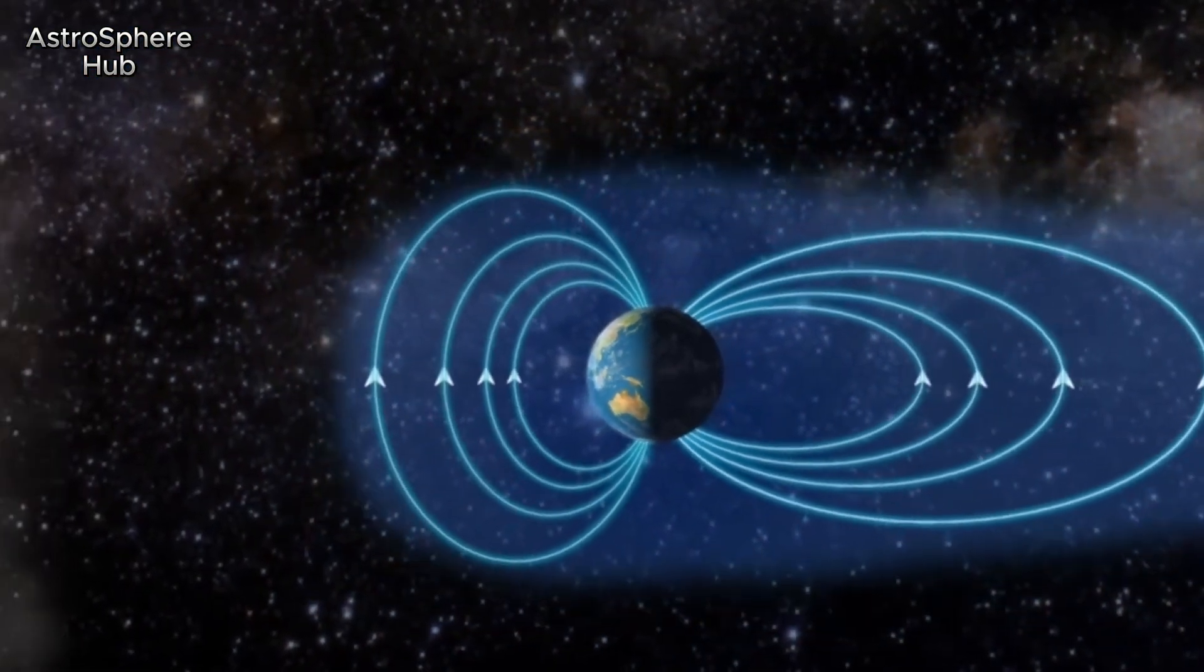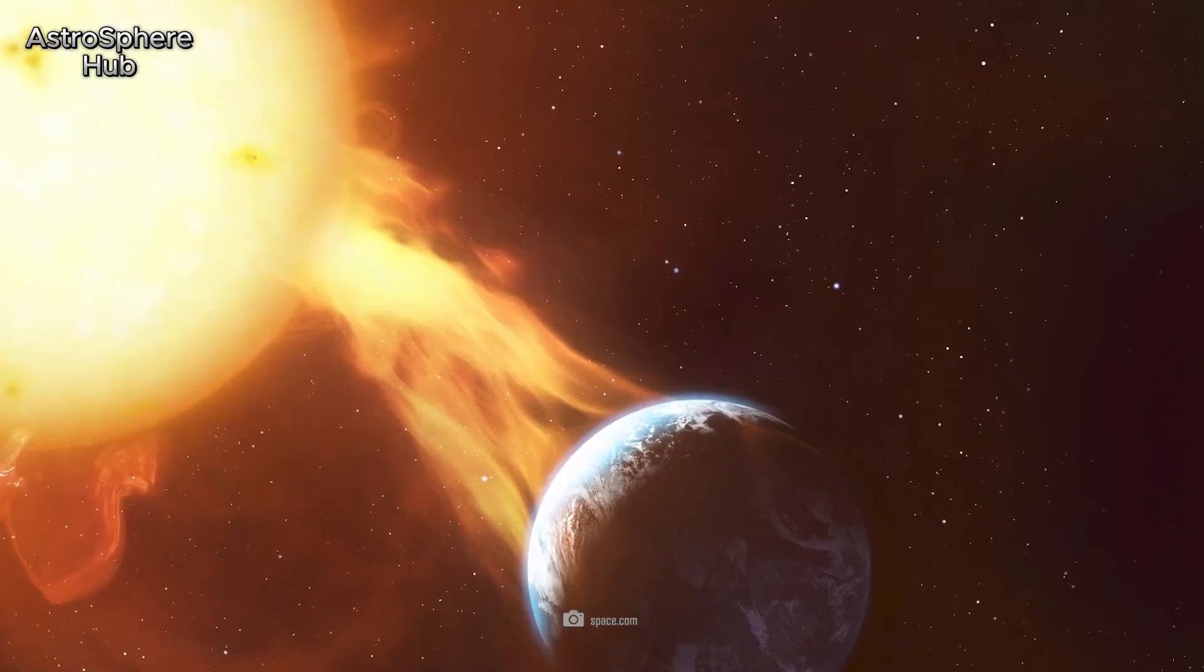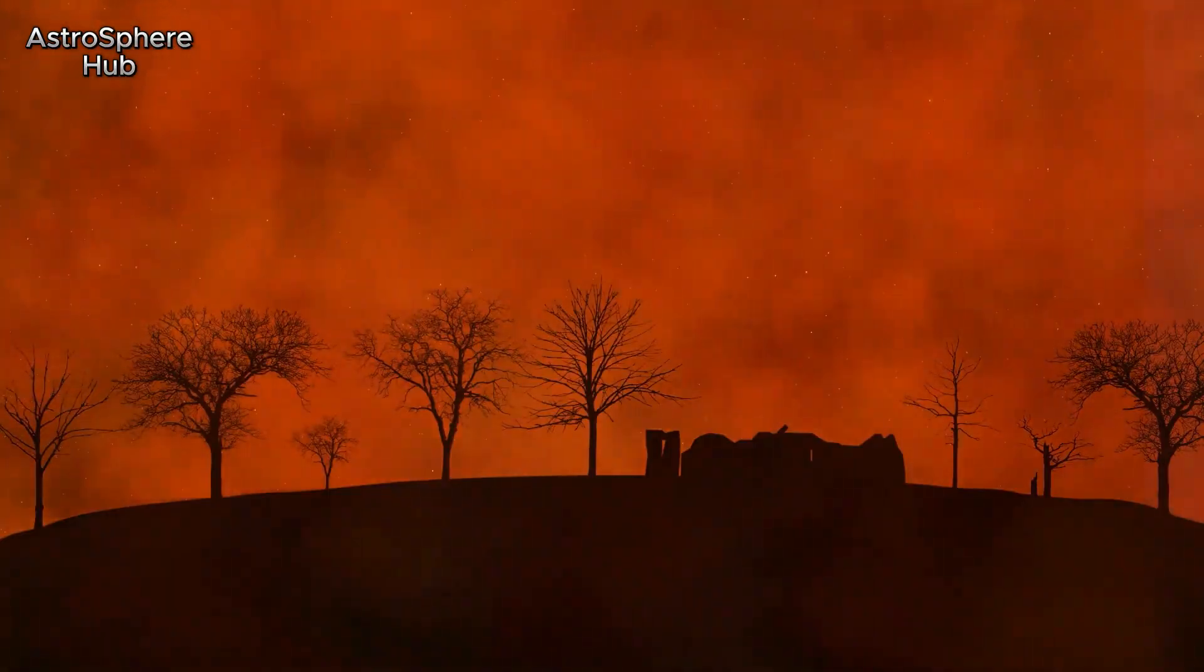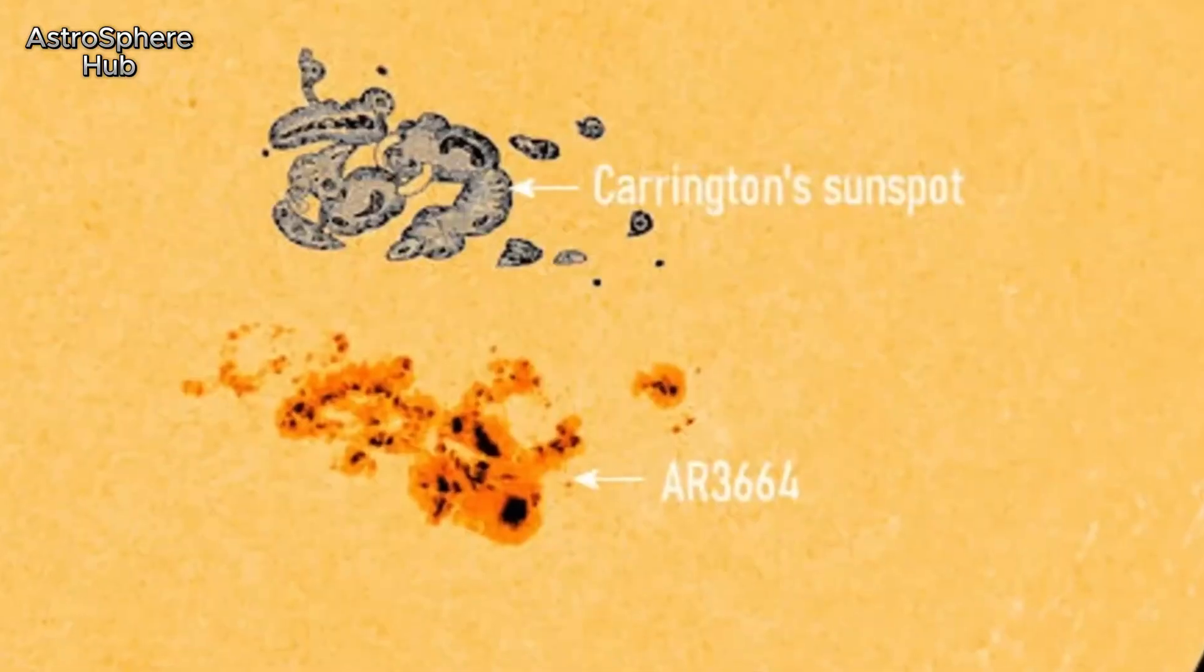The intensity of the geomagnetic storms was unprecedented and comparable in intensity to the famous Carrington event of 1859. Only this time, we had hardly any damage.